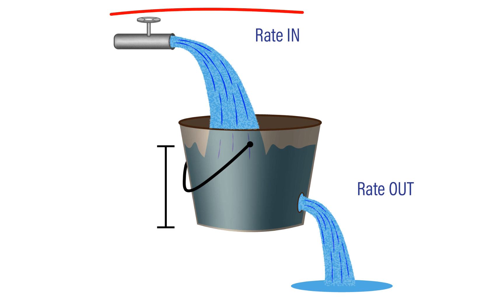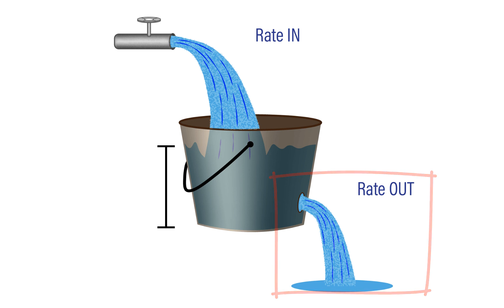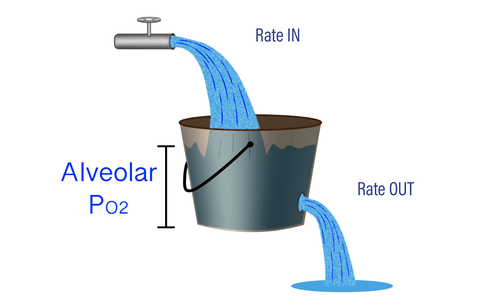The bucket is being filled with water from a spigot, which determines the rate at which water is entering the bucket, but because it has a hole, water is allowed to leave the bucket, and this represents the rate out. The water level in the bucket represents the partial pressure of oxygen in the lungs. What ultimately determines the water level in our bucket is a function of the rate in and the rate out.